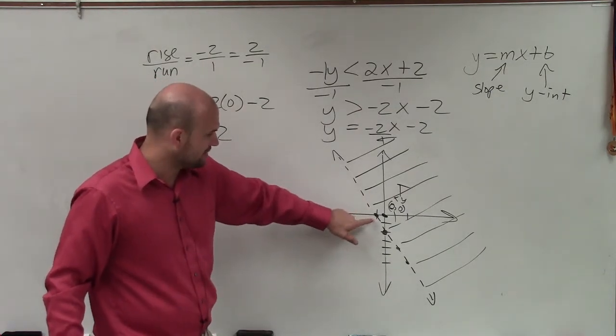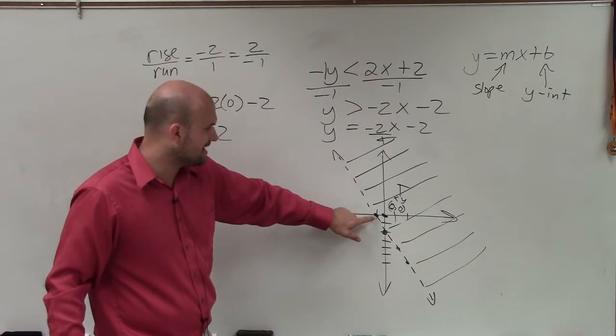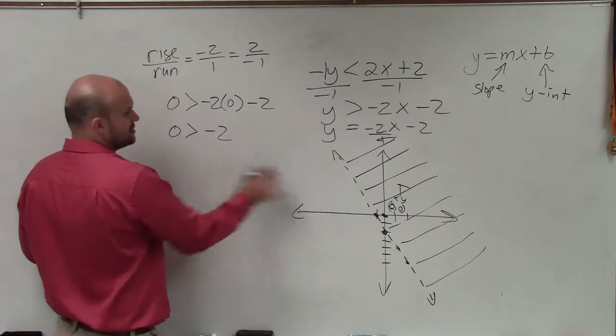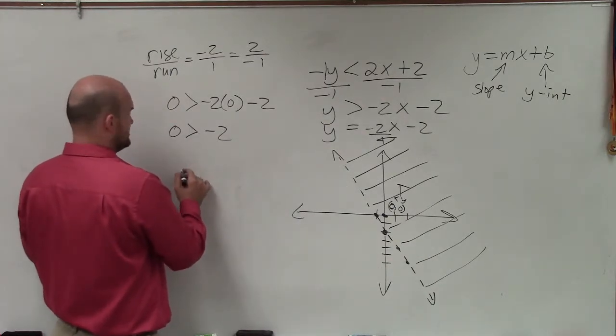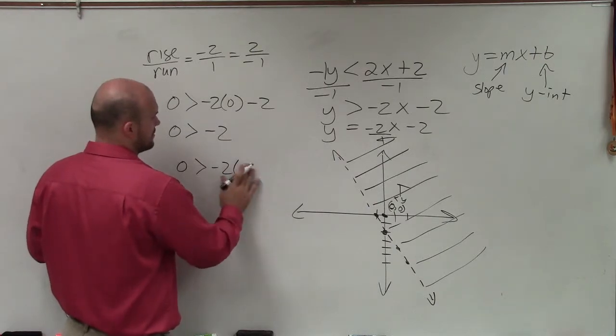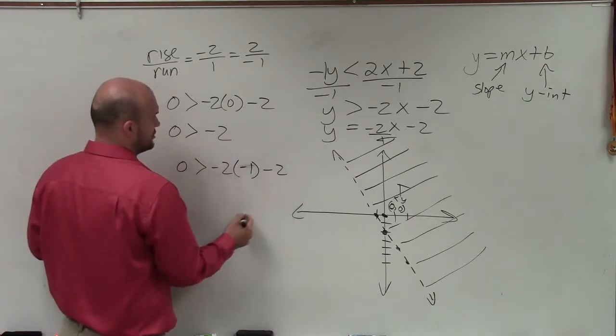And any point that is below the line will be false, as well as any point that lies on the line, including this point, negative 1, 0. And let's just show that to show why it's dashed. So if I was going to plug in negative 1, 0, I would have 0 greater than negative 2 times negative 1 minus 2.